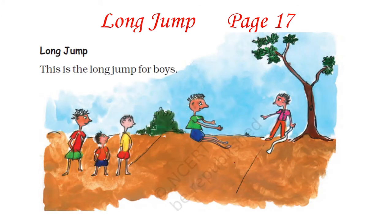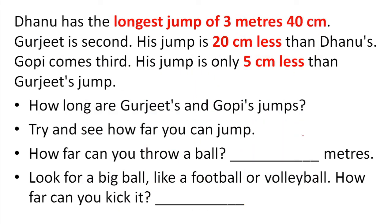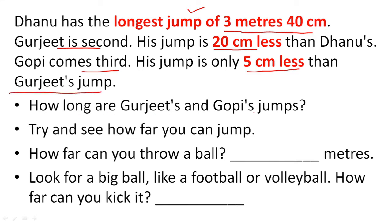Now, long jump — page number 17. In long jump, you run and jump from a line, and the distance is measured by a measuring tape. Dhanu has the longest jump of 3 meters 40 centimeters. Gurjit is second — his jump is 20 centimeters less than Dhanu. Gopi comes third — his jump is 5 centimeters less than Gurjit.